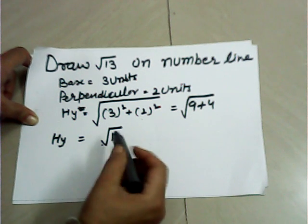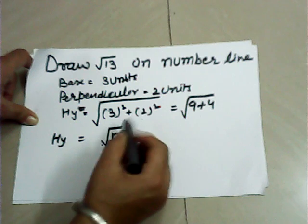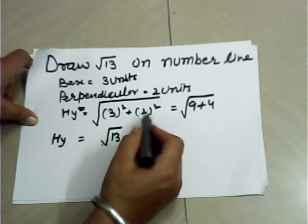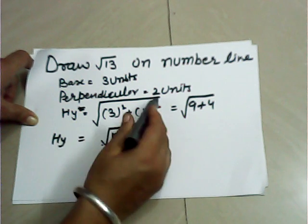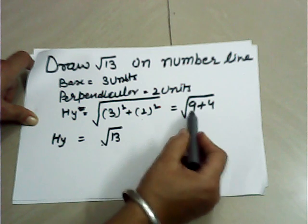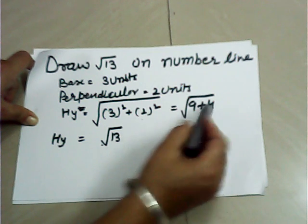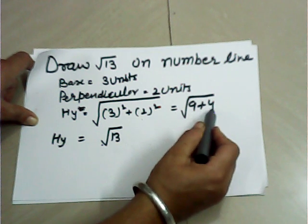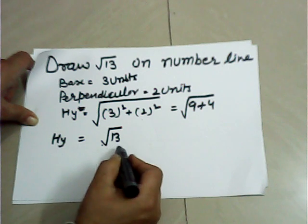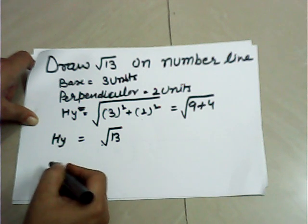Now base = 3² + perpendicular = 2², whole under root. Now 3² = 9 and 2² = 4. 9 + 4 = 13. Then hypotenuse = √13.